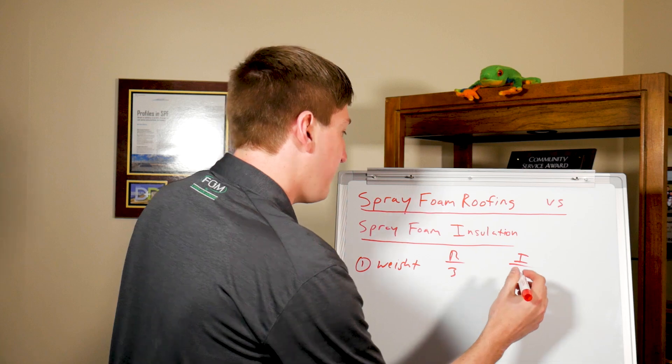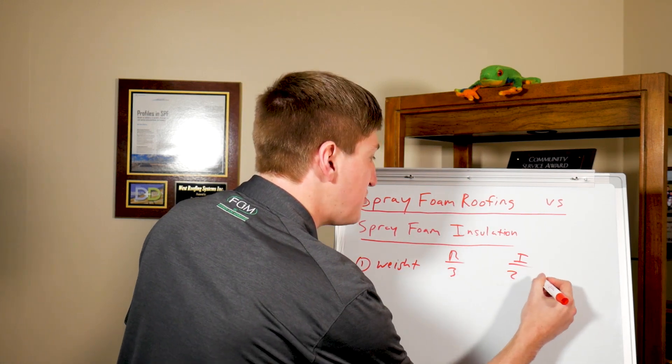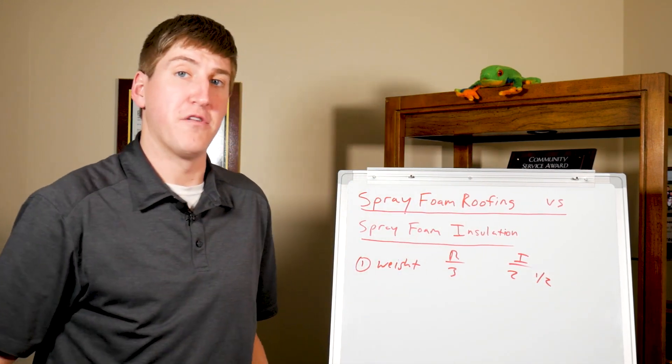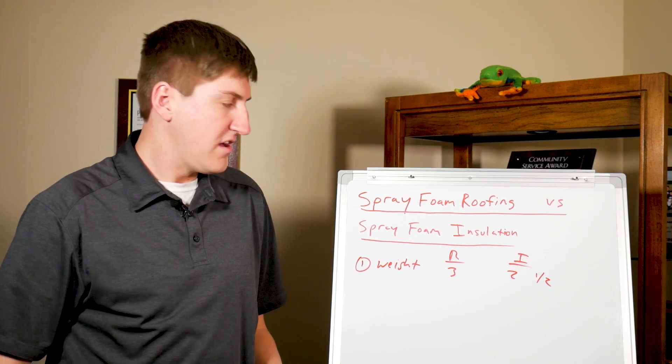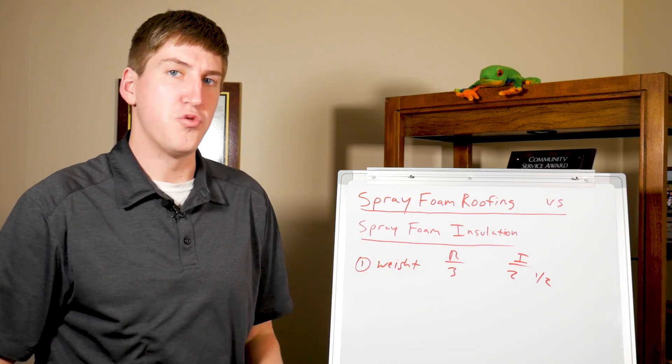Spray foam for roofing uses three pound foam and interior uses two pound or half pound foam. And really the difference is the density of the product. Three pound's a lot more dense than two or half pound.